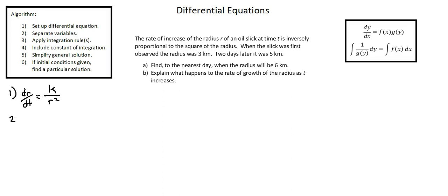Step two: separate variables. We want to get the r terms on the left side of the equation, and the t terms on the right side of the equation. So we'll multiply by r squared, and we will set this with respect to r. We're going to be integrating equals, also an integral. The t term is already on the right side of the equation. Now there is no t. Right now, we simply have the constant k, but we're going to integrate with respect to t.